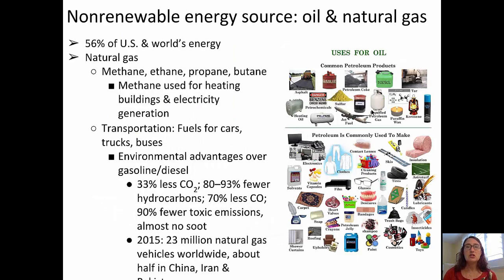Moving on to talk about oil and natural gas. Fifty-six percent of the United States and global energy comes from oil and natural gas. Natural gas comes in the form of methane, ethane, propane, and butane. Methane is primarily used for heating buildings and for electricity generation.